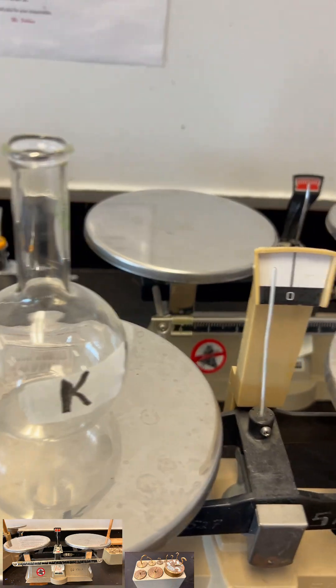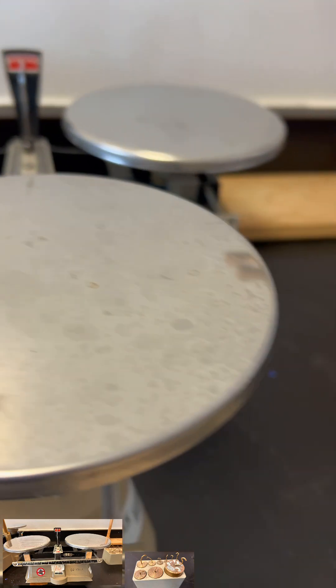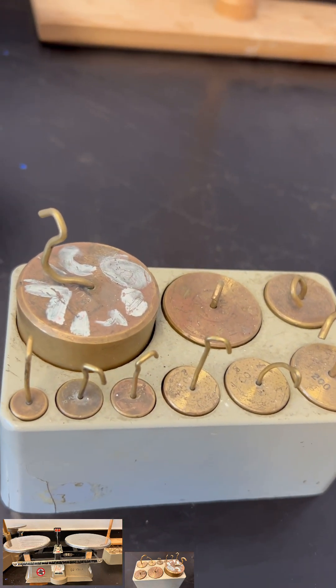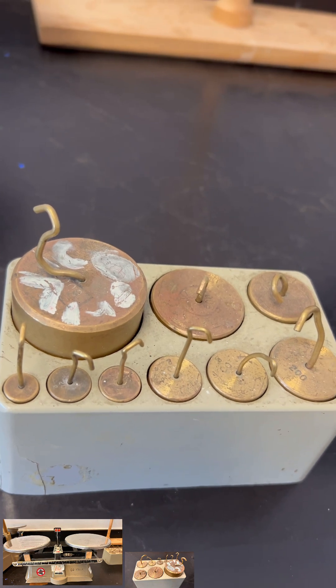For objects like this Florence flask or beaker, you need to get the set of weights here. Okay, there you go Falcons, your turn.